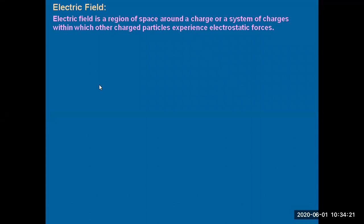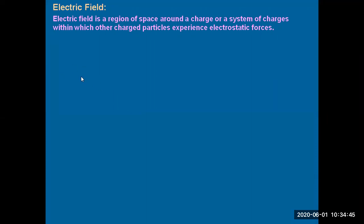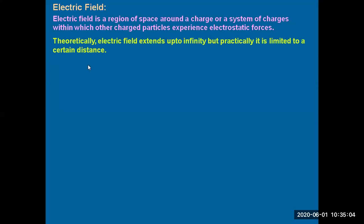As you bring the magnets closer and closer, the force of attraction becomes stronger. That means a magnet placed in a certain region has maximum force only in the surrounding region — that is called magnetic field. Similarly here we call it electric field. It is a region of space around a charge or system of charges within which other charged particles experience electrostatic force.